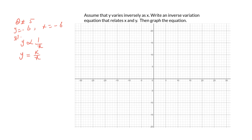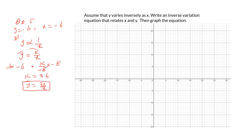Now we need to figure out the value of k. Just plug in the given values of x and y into this equation: y is negative 6 and x is negative 6. Multiply negative 6 on both sides — this cancels out — and k equals negative 6 times negative 6, which is positive 36. So the equation is y equals 36 over x.